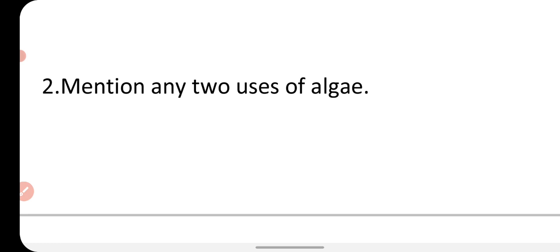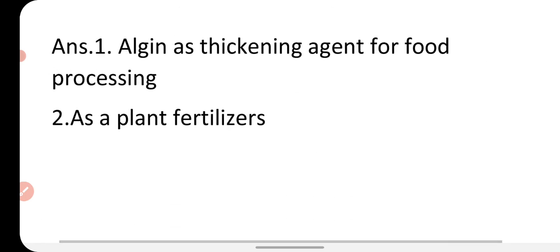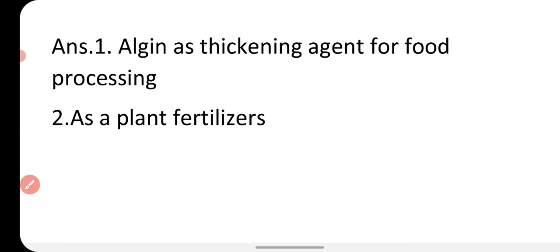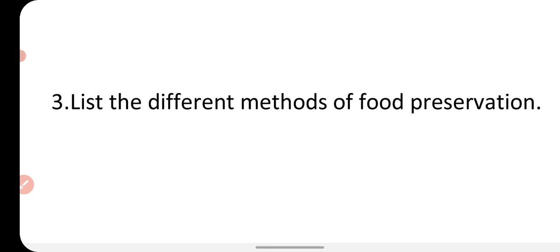The next question is: mention any two uses of algae. Algae is a kind of microorganism which is autotrophic — they have green pigments and can make their own food. We get a substance from algae named algeen, which acts as a thickening agent for food processing. From algae we can also produce plant fertilizers.